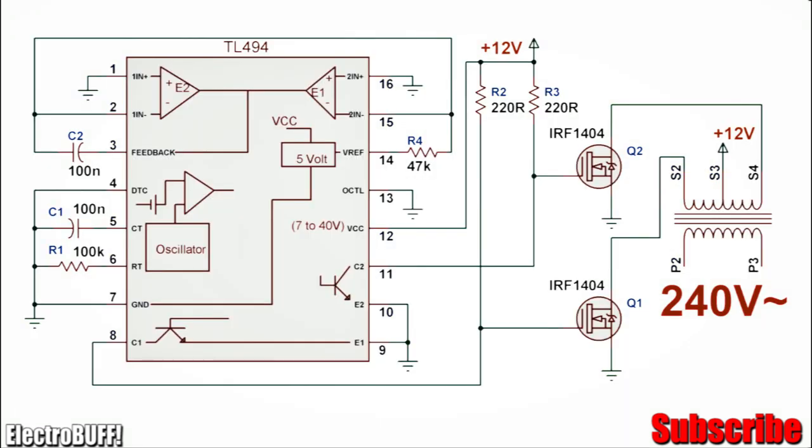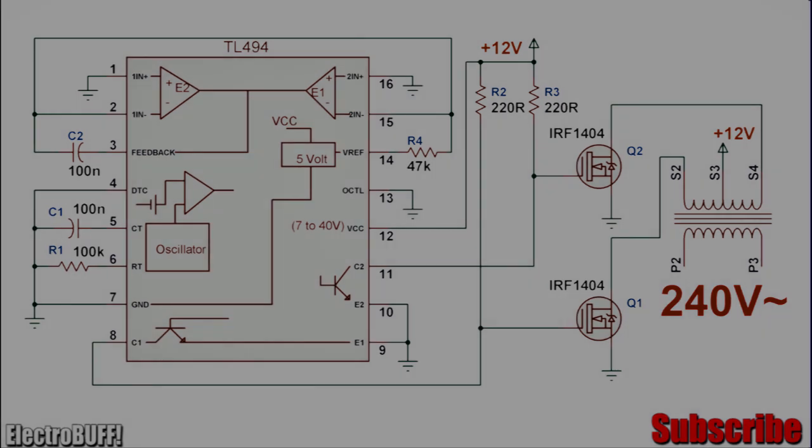The transformer is a common iron core transformer and the winding ratio should be 1 is to 20. You can use one with an input of 240 and a dual output of 12-0-12 and use it in the reverse manner. It should work just fine.